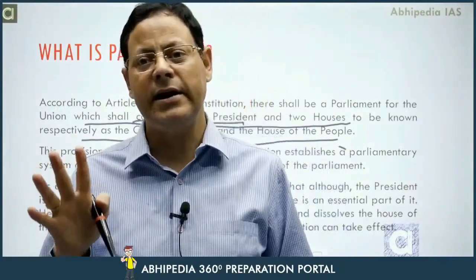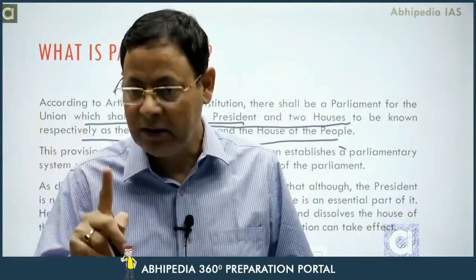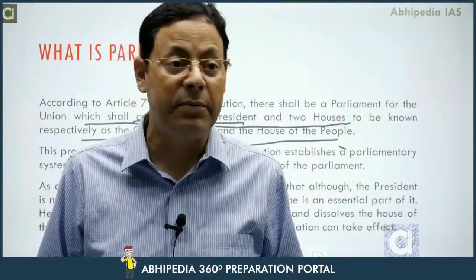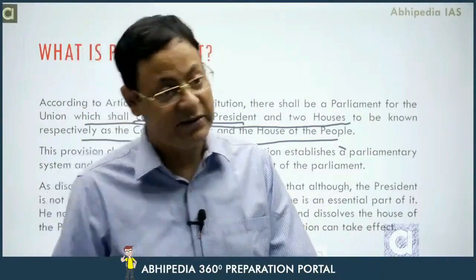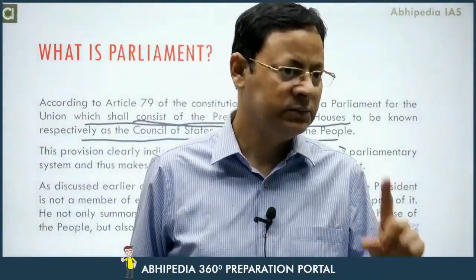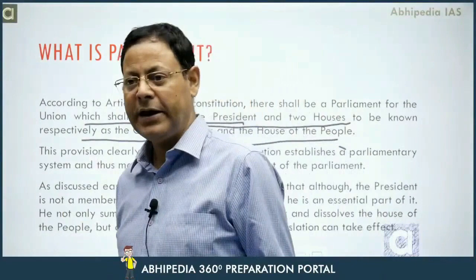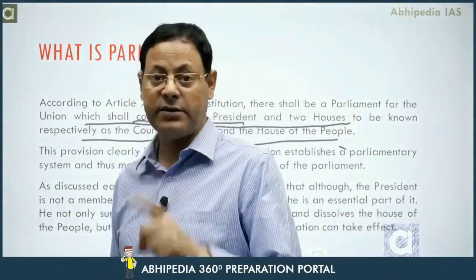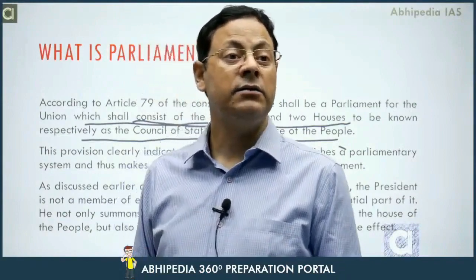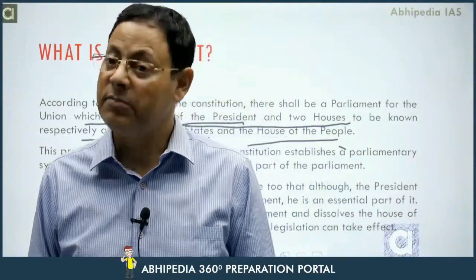The Constitution describes these institutions as Council of States and House of the People. The Hindi names Lok Sabha and Rajya Sabha were given by the first Chairman of Rajya Sabha, Dr. S. Radhakrishnan. In 1954, Dr. S. Radhakrishnan became instrumental in giving the names Rajya Sabha and Lok Sabha to these two houses.